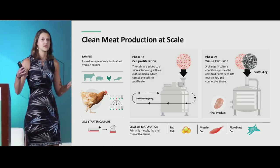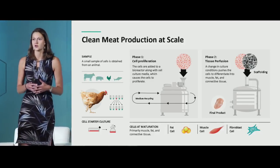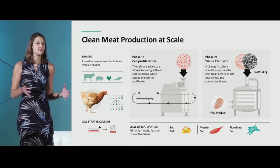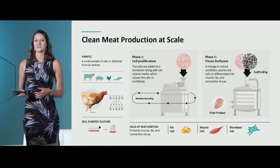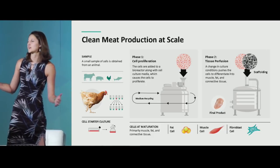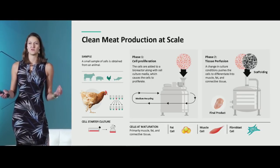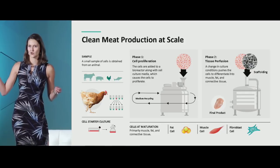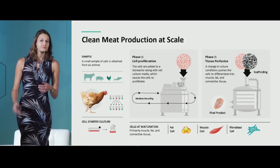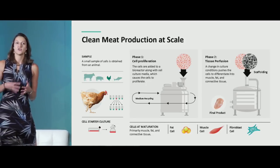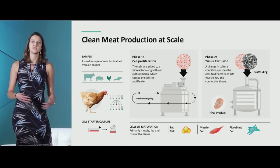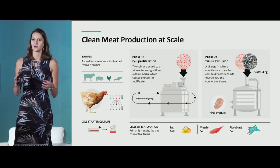After deriving starter cells, you go into what's called a seed train — scaling up the number of cells you're working with. From there you go into true large-scale production in a two-phase process. The first phase is cell proliferation: taking your small number of cells and multiplying them into a very large number. We capitalize on the biological principle of exponential growth — one cell becomes two, becomes four, becomes eight. From there, you take that cell biomass and convert it into the desired final cell types in the structural arrangement you're looking for.